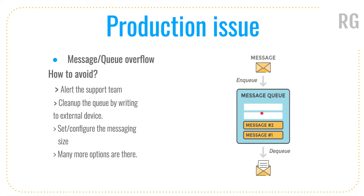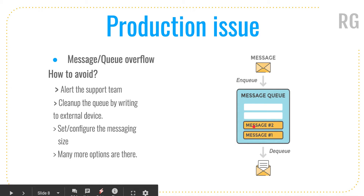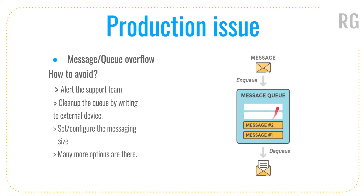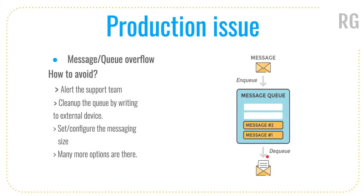To avoid queue overflow, support teams typically set up an alerting mechanism — for example, when the queue goes beyond 70% of its capacity, an alert is sent. The support person then investigates and can fix it in multiple ways: either resolve why the receiving end is not processing messages, or write the messages to a different local store and replay them into the queue once everything is fixed. There are many configuration mechanisms to handle this situation.